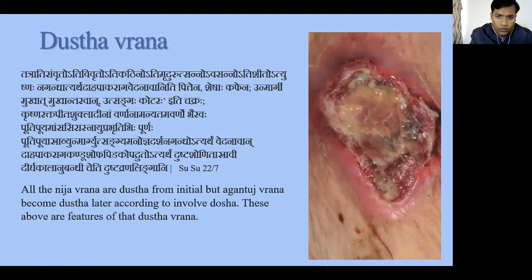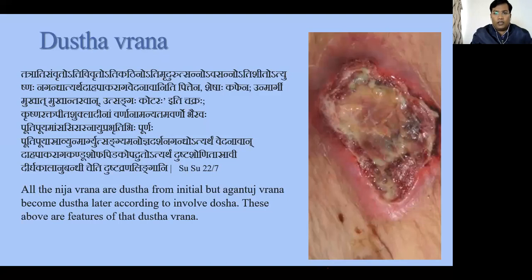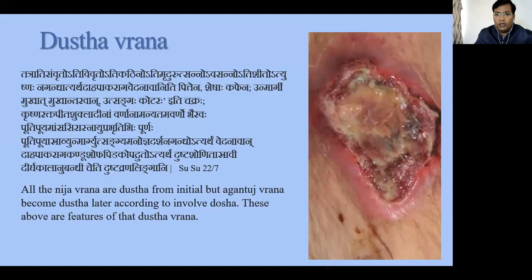The features of Dushta-Vrana are described in the sloka of chapter 22, verse 7: Atisamrthu means severely contracted, severely dilated, very large; Atikattino means extremely hard; Atimrdhu means extremely soft; Avashanno and Utshanno means depressed and elevated — meaning any kind of deformity present in greater amount. Any such deformity would cause chronicity in the wound.